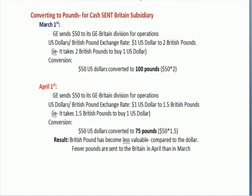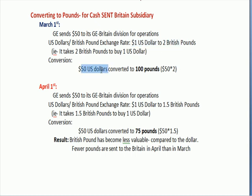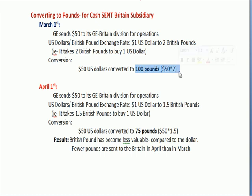What if GE, the U.S. company, is sending cash to Britain? That means we have to convert into British pounds. GE sends $50 U.S. dollars to Britain. The exchange rate is 2 pounds per dollar — you send $50 and get 100 pounds (50 times 2). That's what happens on March 1st.